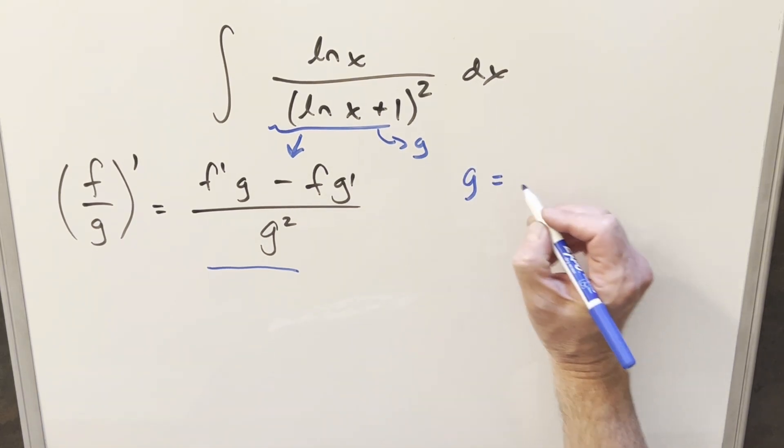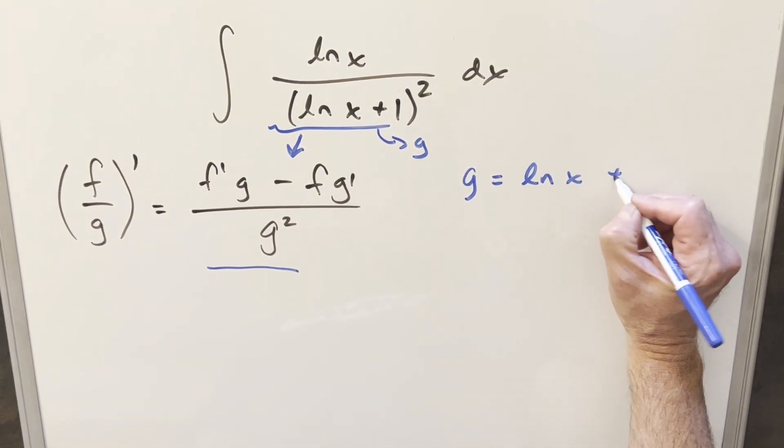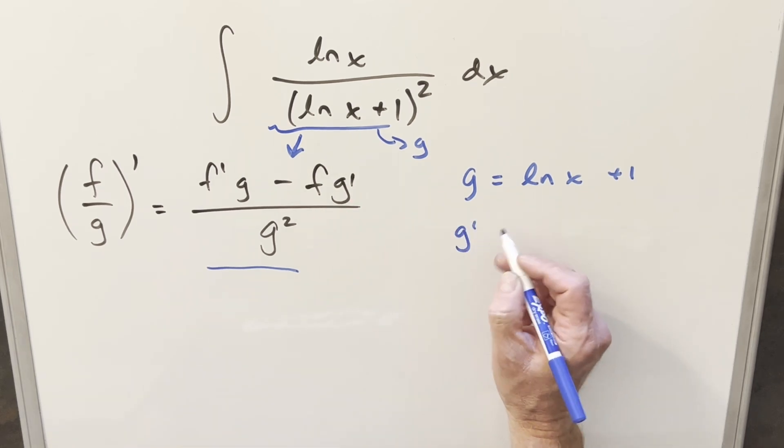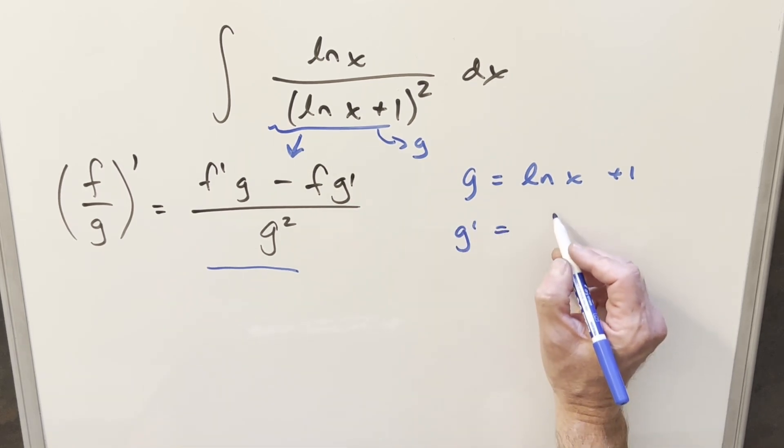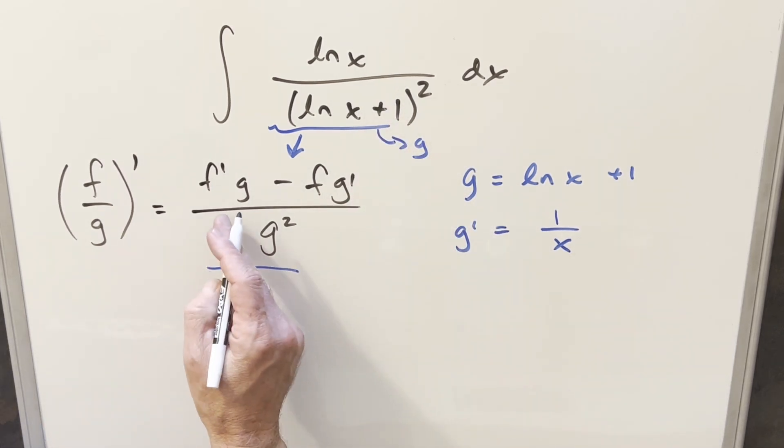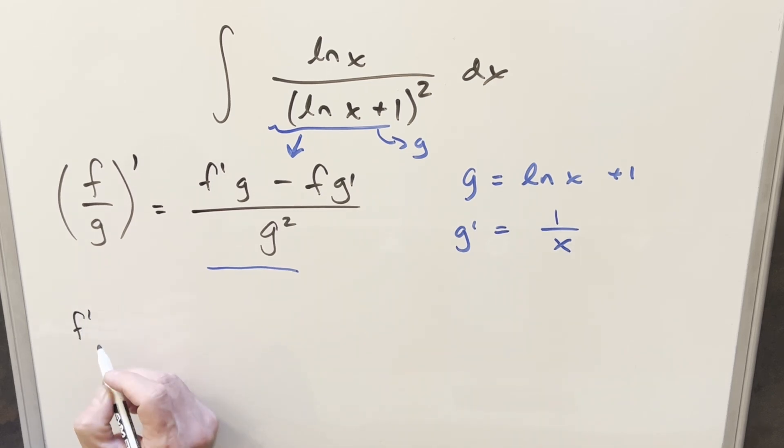We're saying g is going to be natural log x plus 1. And then we're going to need a g prime value, and that's going to be easy. So we just take a derivative of this, and we just get 1 over x. So we know our denominator is going to work, but now we need to focus on this numerator. And we have no idea what our f is. We know what our g is.